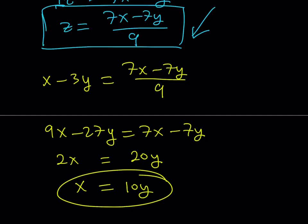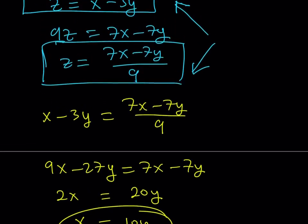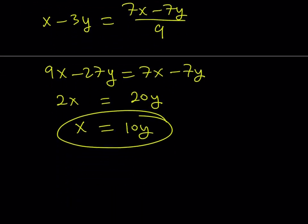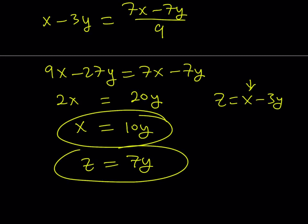x equals 10y is a very important result — now we can use it in the original equations. We also need z in terms of y. Taking z equals x minus 3y and replacing x with 10y: z equals 10y minus 3y equals 7y. So we have z equals 7y. The values are proportional. An alternative approach — which I'll mention at the end — might have been easier, but let's continue.